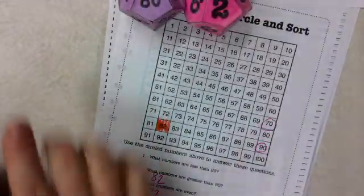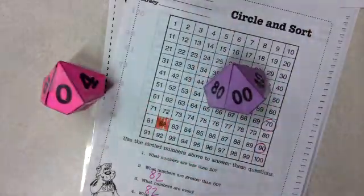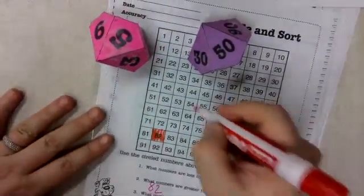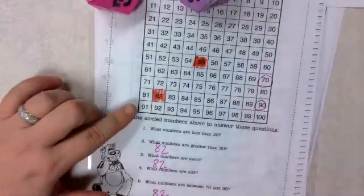Next, go ahead and roll again. And do as many of these with the group together. Oh, we got zero. I'd roll again because that wouldn't fit on there. Fifty-five. Color it. Go through, answer the questions.